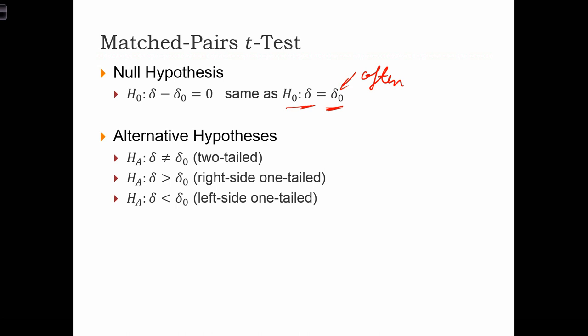Again, we can have non-directional cases—this is the two-tailed test. And we can have two directional cases where the difference is actually greater than or less than the hypothesized difference. So maybe the difference is greater than zero, or less than zero.